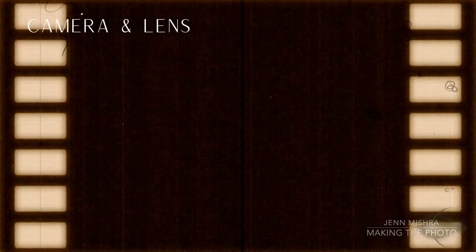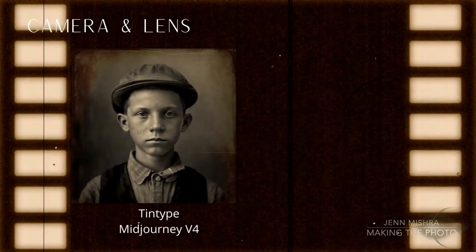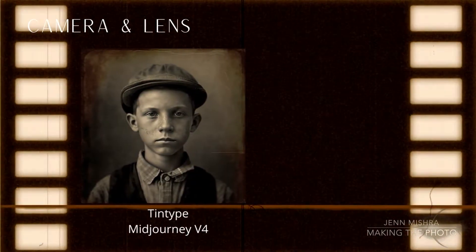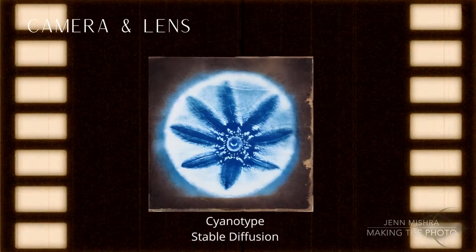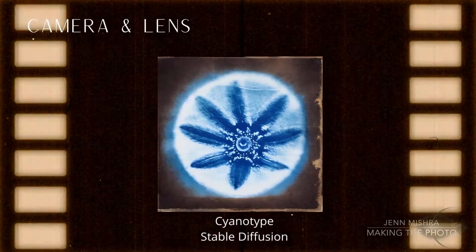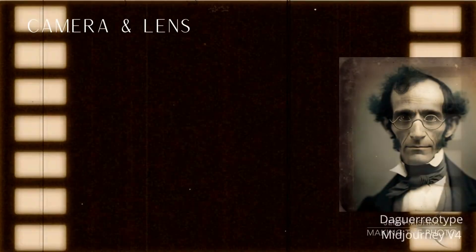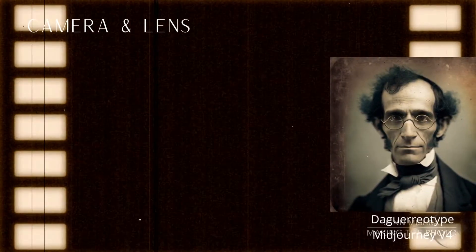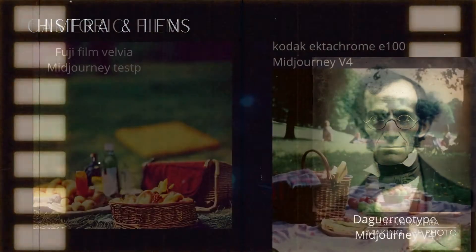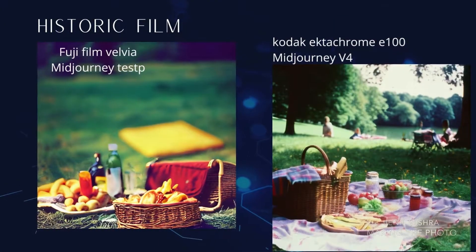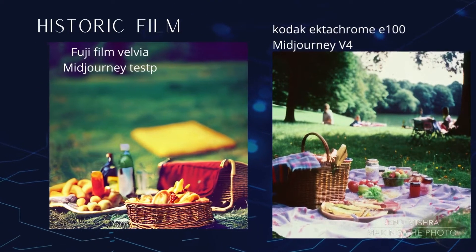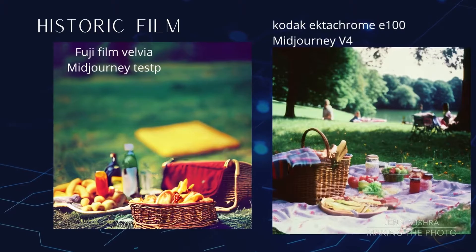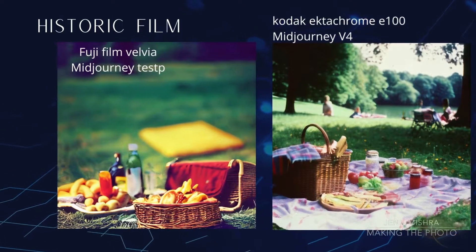The AI is particularly good at creating historic photography and film types, like wet plate, tintype, or cyanotype. You'll get the styles, colors, tones, and artifacts found in old photos. And some AI can render specific film types, like Kodak Ektachrome or Fujifilm Velvia.